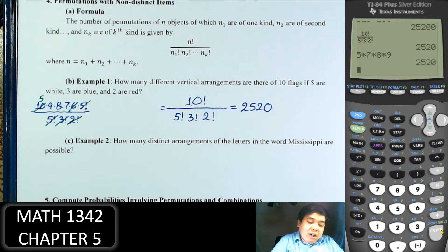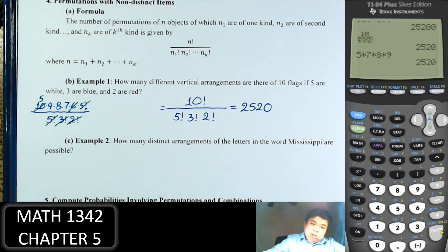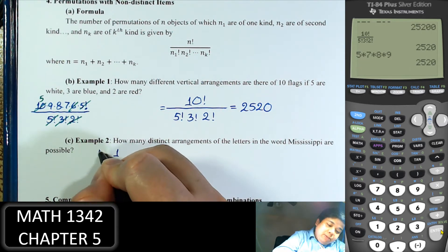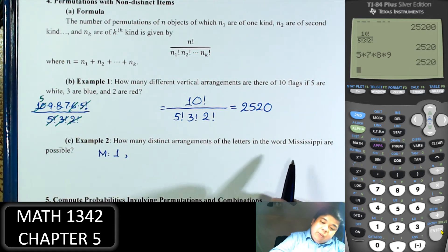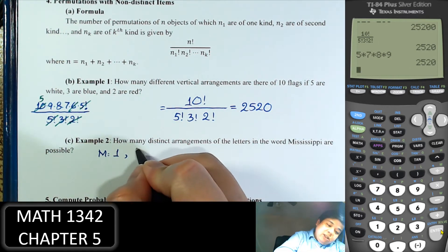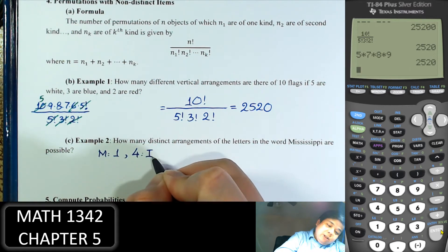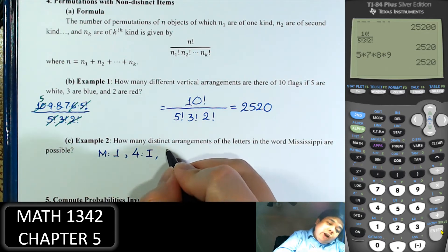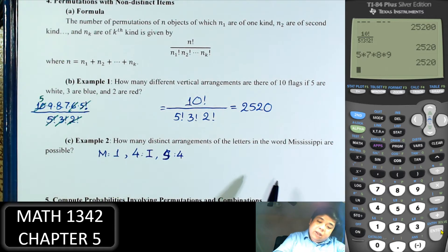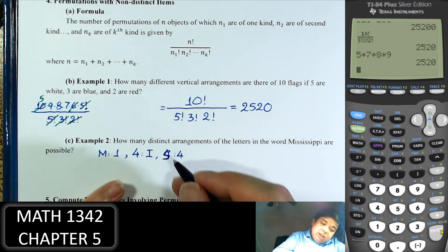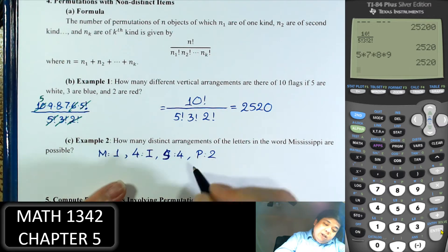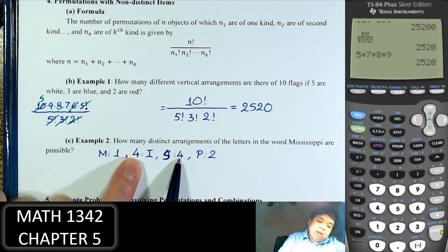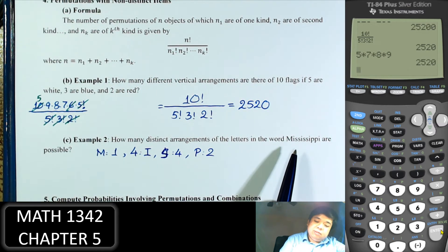How many different arrangements of the letters in the word Mississippi are there? There is 1 M, 4 I's, 4 S's, and 2 P's. In total there are 11 letters.